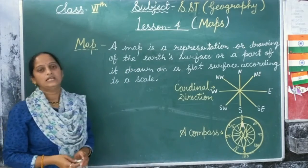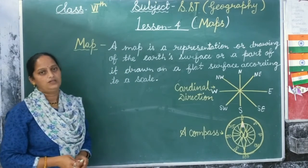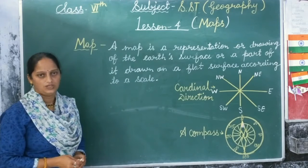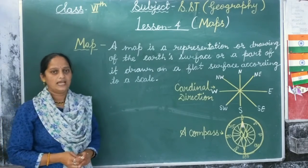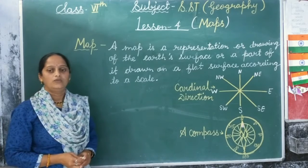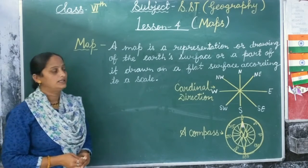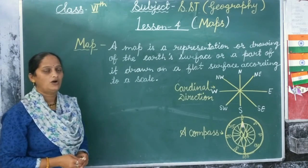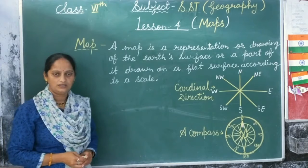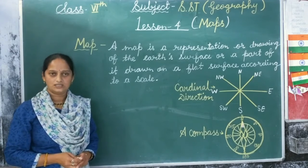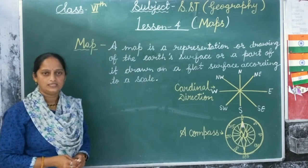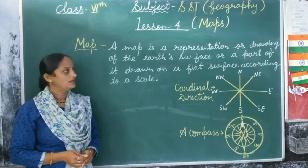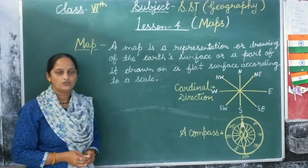In chapter 2, we learned about the globe. However, the globe has some limitations. The globe is helpful when we want to study the earth as a whole, but when we want to study a part of the earth — like our country, states, districts, towns and villages — the globe is of little help. In such conditions, maps are useful for us.